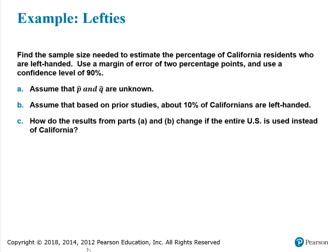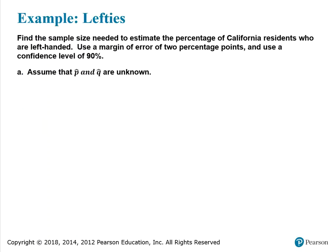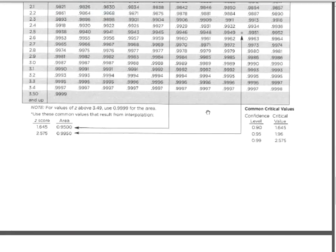Here's another example: find the sample size needed to estimate the percentage of California residents who are left-handed, using a margin of error of two percentage points and a confidence level of 90%. Part A assumes P-hat and Q-hat are unknown. Part B assumes that based on prior studies about 10% of Californians are left-handed. There is also a follow-up question asking how results change if the entire U.S. is used instead of California. To find the formula, we turn to a formula and charts packet.